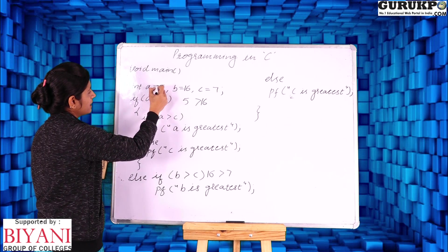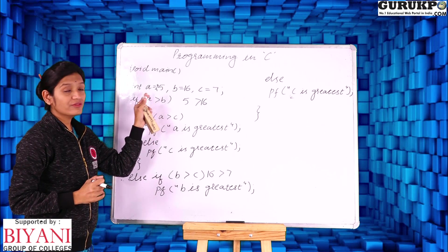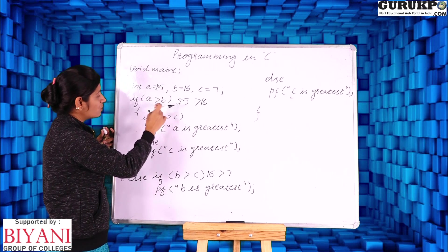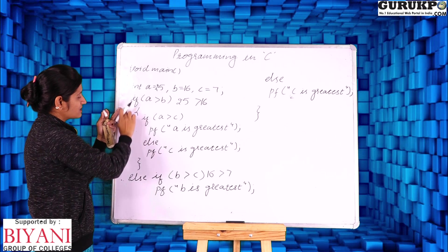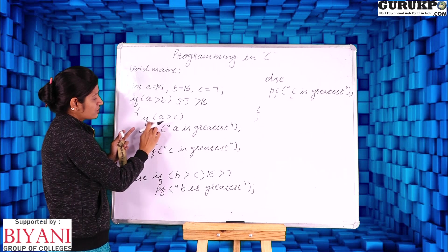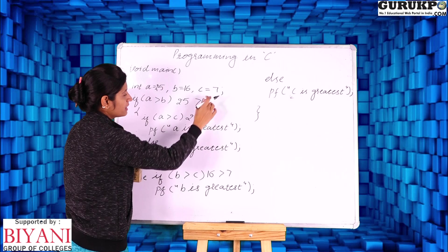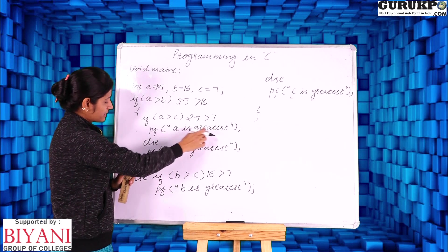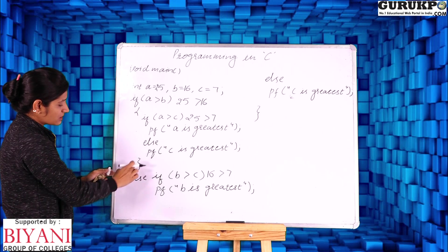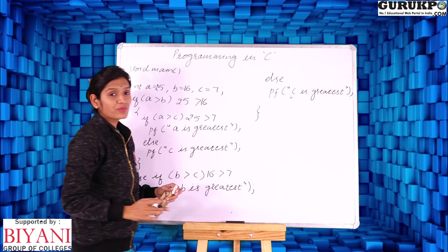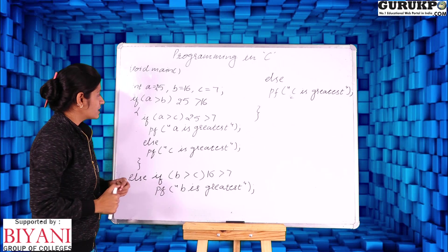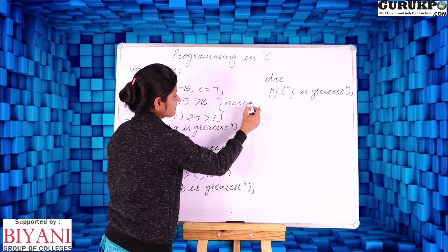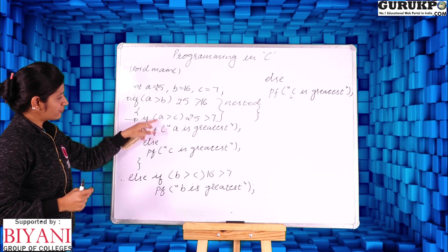Now let us change the value of a to 25, so a should be greatest. We check a greater than b: 25 greater than 16 — yes, it is true. We come inside and check another condition; this is exhibiting the work of nested if. We check a greater than c as well: 25 greater than 7 — yes. So we print a is greatest. Since it is in the else part, the remaining branches are skipped. These two checks demonstrate nested if — an if within another if.